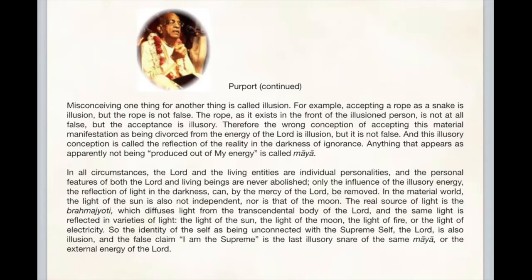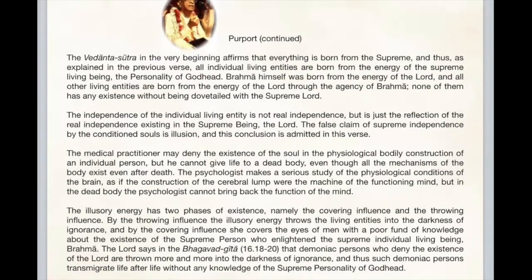The real source of light is the brahma-jyoti, which diffuses light from the transcendental body of the Lord, and the same light is reflected in varieties of light — the light of the sun, the light of the moon, the light of fire, or the light of electricity. So the identity of the self as being unconnected with the supreme self, the Lord, is also illusion, and the false claim 'I am the supreme' is the last illusory snare of the same maya or the external energy of the Lord.